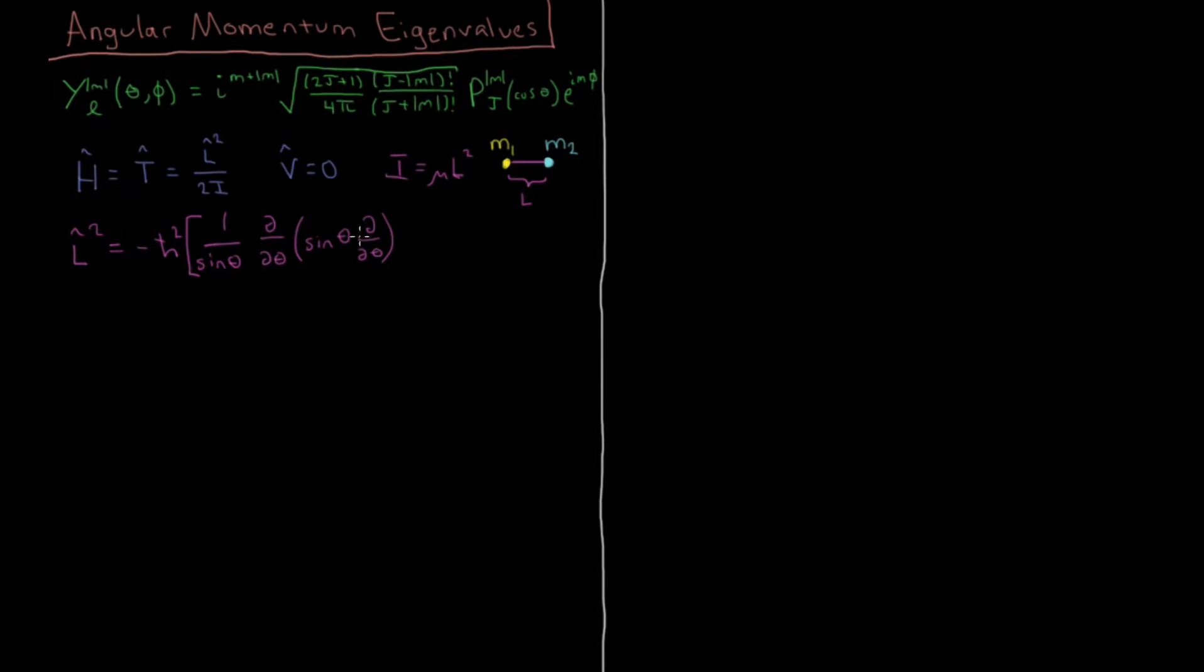all of that inside of sine theta, another partial with respect to theta, so remember our order of operations, take the derivative with respect to theta, then multiply it times sine, then take the derivative again, and then this plus 1 over sine squared theta